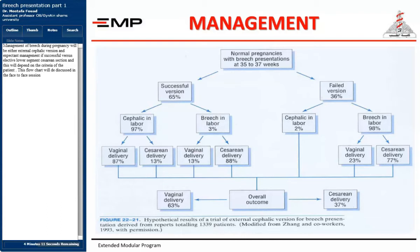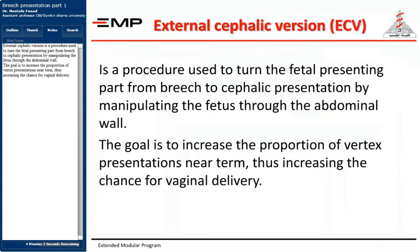External cephalic version (ECV) is a procedure used to turn the fetal presenting part from breech to cephalic presentation by manipulating the fetus through the abdominal wall. The goal is to increase the proportion of vertex presentations near-term, thus increasing the chance for vaginal delivery.